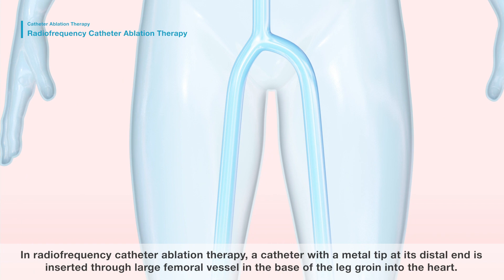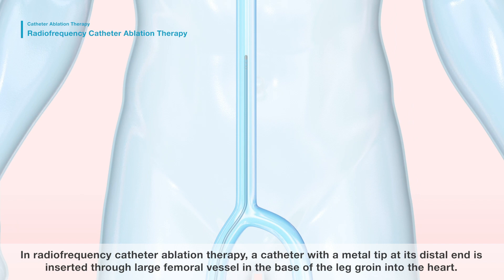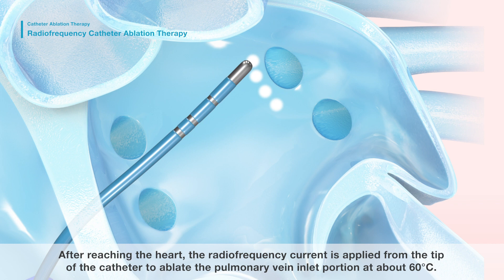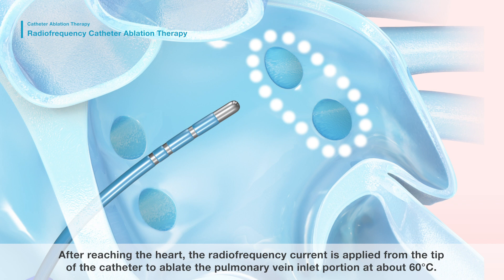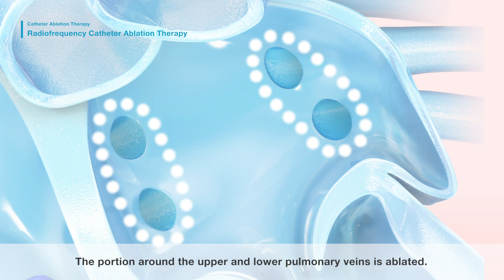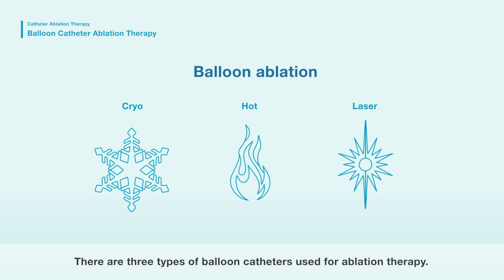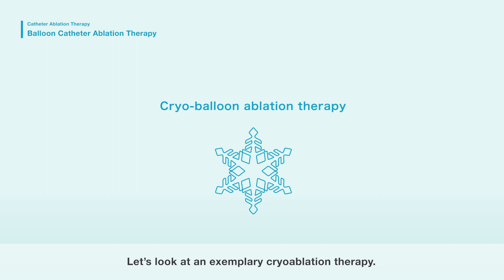In radio frequency catheter ablation therapy, a catheter with a metal tip at its distal end is inserted through the large femoral vessel at the base of the leg and groin into the heart. After reaching the heart, radio frequency current is applied from the tip of the catheter to ablate the pulmonary vein inlet portion at about 60 degrees Celsius. The portion around the upper and lower pulmonary veins is ablated.